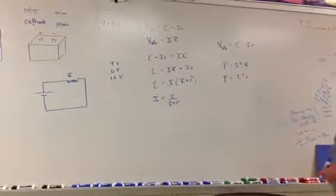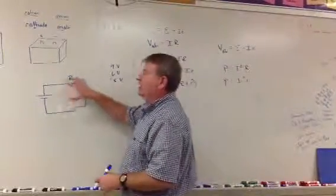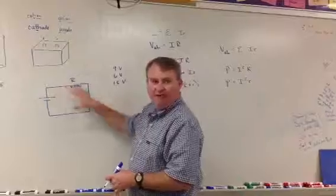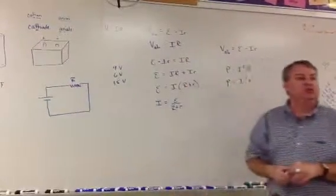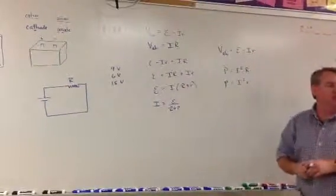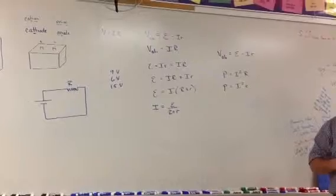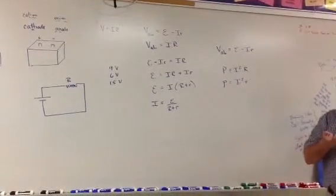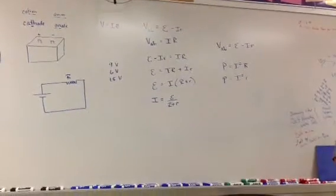In a circuit, your current can change depending upon what you have in the circuit, but your voltage is pretty much always going to be the same. So a battery is a constant source of voltage and a non-constant source of current.